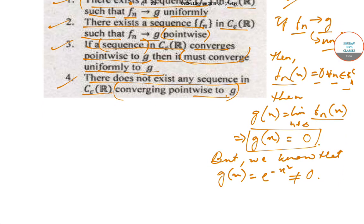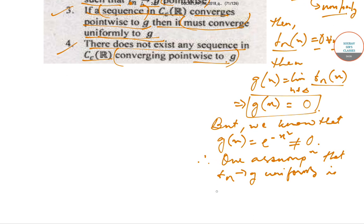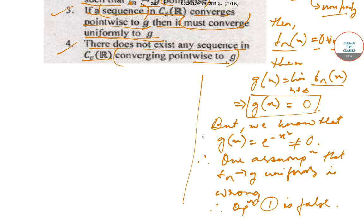Therefore our assumption that Fn converges to G uniformly is wrong. So option 1 is false.